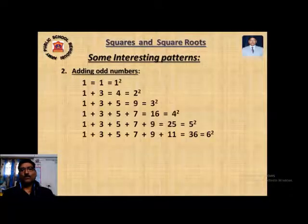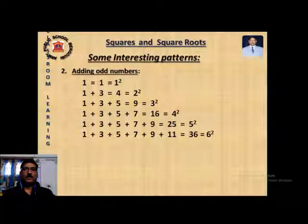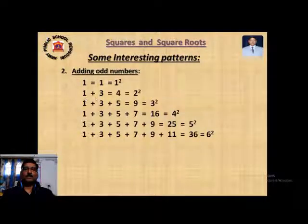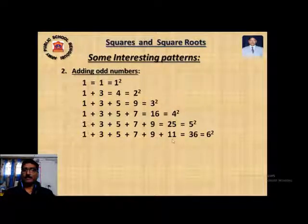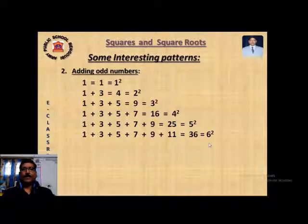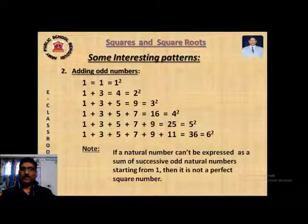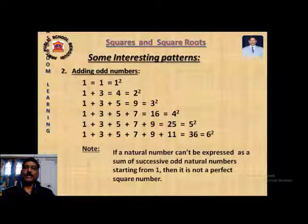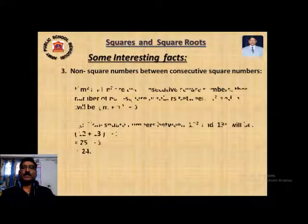Next: all square numbers can be expressed as a sum of successive odd natural numbers starting from 1. For example: 1 = 1²; 1 + 3 = 4 = 2²; 1 + 3 + 5 = 9 = 3²; 1 + 3 + 5 + 7 = 16 = 4²; 1 + 3 + 5 + 7 + 9 = 25 = 5². If a natural number cannot be expressed as a sum of successive odd natural numbers starting from 1, then it is not a perfect square number.